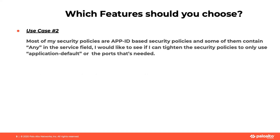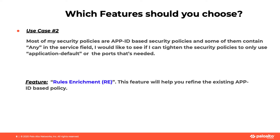Use case number two: Most of my security policies are App ID-based and some of them contain any in the service field. I would like to tighten the security policies to only use application default or the ports that are needed. The feature you will choose is Rule Enrichment. By adopting Rule Enrichment, you will be able to refine the existing security policy to replace any in the service field with specific custom ports or application default ports.